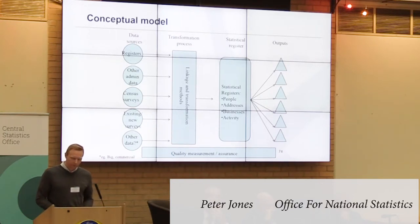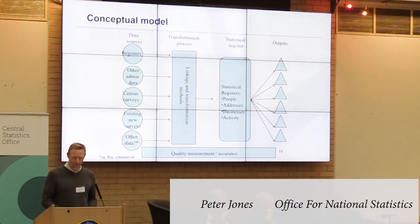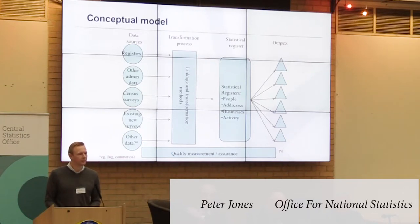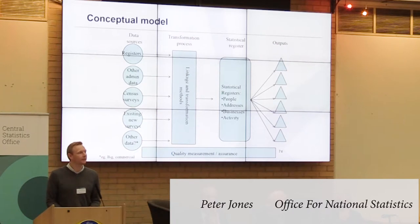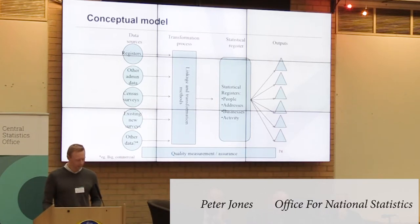At ONS we're looking to integrate three statistical registers primarily. We already have a statistical business register in place, and we're very close to delivering a high-quality address index — something called the Unique Property Reference Number, or UPRN — which is pretty well established and a very good frame for producing household statistics. Where we're really struggling is on the person side. We don't have a population register and we don't have the equivalent of the PPSN used across government sources, so our real challenge has been developing a person index, and a lot of our effort is going into that.